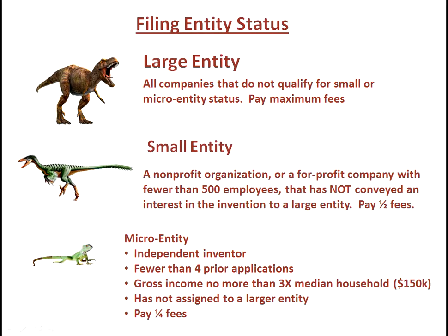A large entity includes all companies that do not qualify for small or micro entity status. If you are a large entity, you will pay maximum fees. A small entity is a non-profit organization or a for-profit company with fewer than 500 employees, including all affiliates, that has not conveyed an interest in the invention to a large entity. If you are a small entity, you will pay one half the fees of the large entity.